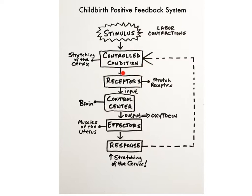The receptors in this feedback system are specialized nerve cells in the cervix, called stretch receptors, that send input in the form of nerve impulses about this increased stretching to the control center, which is the brain. As a result of this input, the brain releases a hormone called oxytocin into the bloodstream as its output. Oxytocin causes the effectors — the muscles of the uterus — to contract even more forcefully than before, resulting in the baby being pushed further down the uterus, which further stretches the cervix.